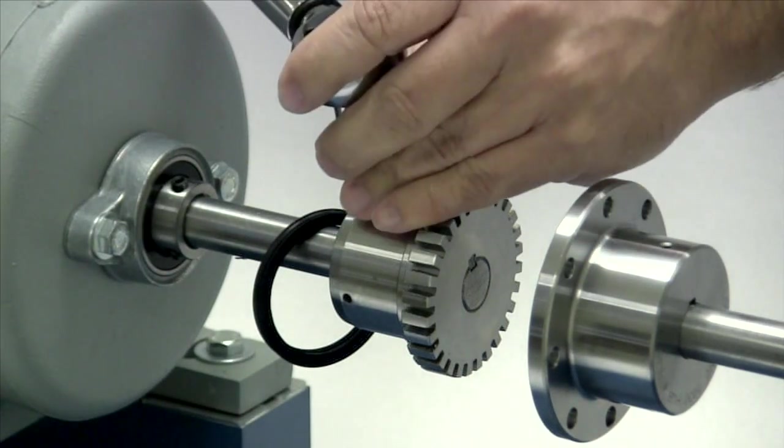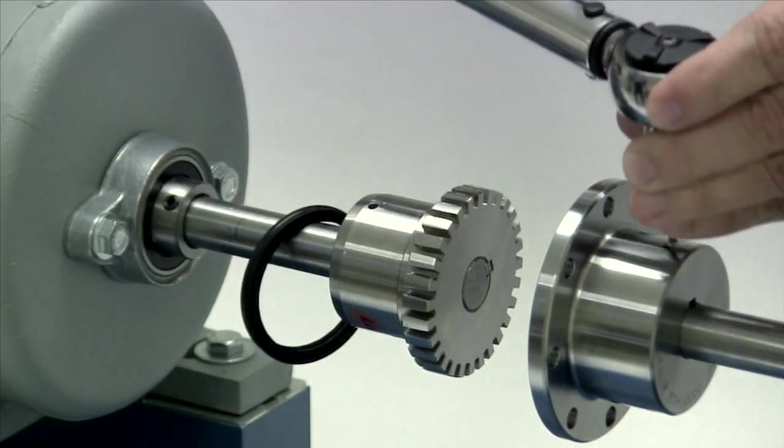With the torque wrench, we will tighten the set screws in both hubs to the torque specified in the installation guide.